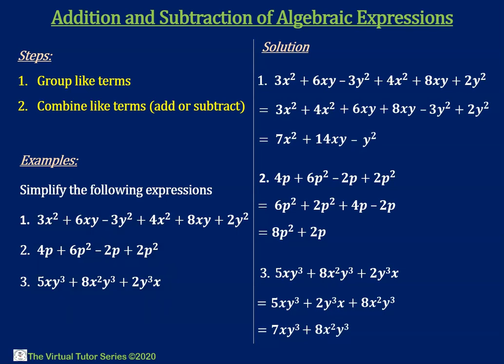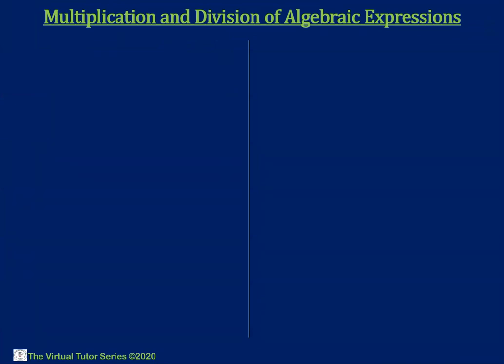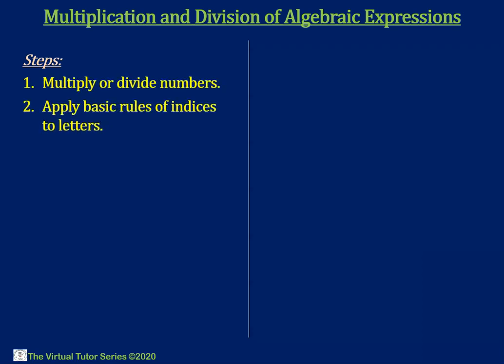Great, let's now move on to multiplication and division of algebraic expressions. We can multiply or divide algebraic expressions by multiplying or dividing the numbers and applying the basic rules of indices to the letters. That is, we add the exponents of the same variable together for multiplication and subtract the exponents for division.